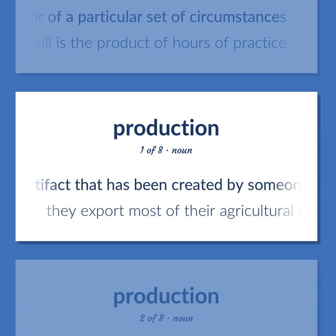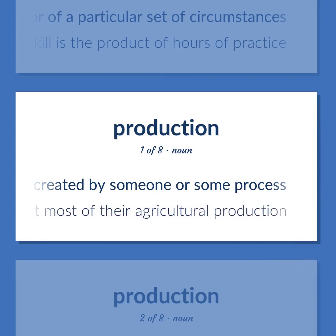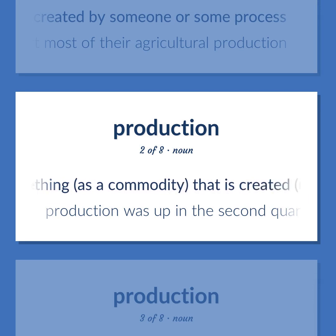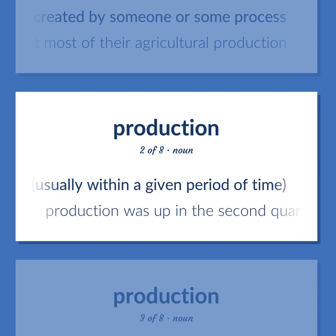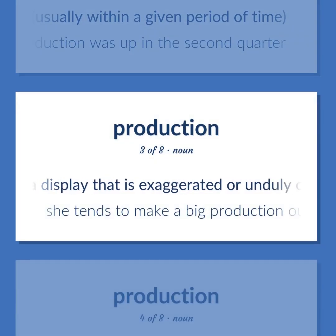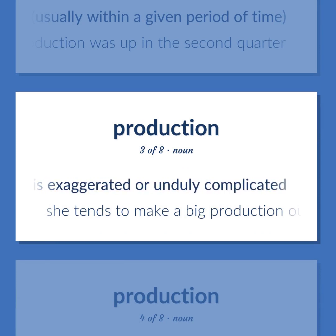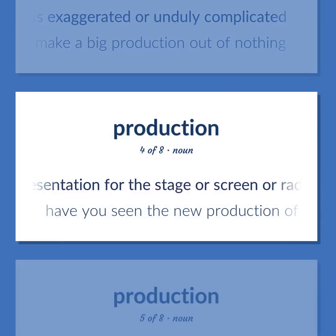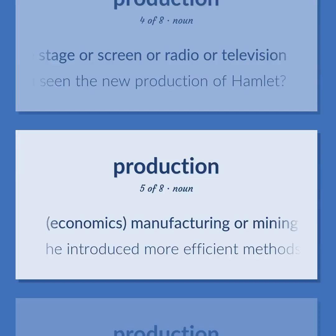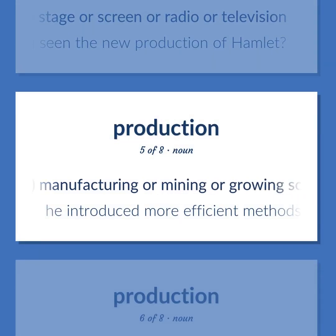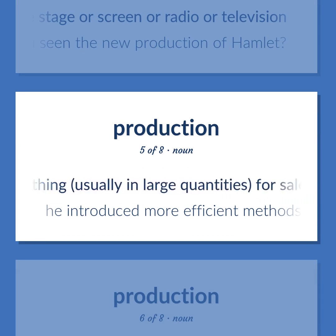Production (noun): An artifact that has been created by someone or some process. Example: They export most of their agricultural production. The quantity of something, as a commodity, that is created, usually within a given period of time. Example: Production was up in the second quarter. A display that is exaggerated or unduly complicated. Example: She tends to make a big production out of nothing. A presentation for the stage or screen or radio or television. Example: Have you seen the new production of Hamlet? Economics: Manufacturing or mining or growing something, usually in large quantities, for sale. Example: He introduced more efficient methods of production.